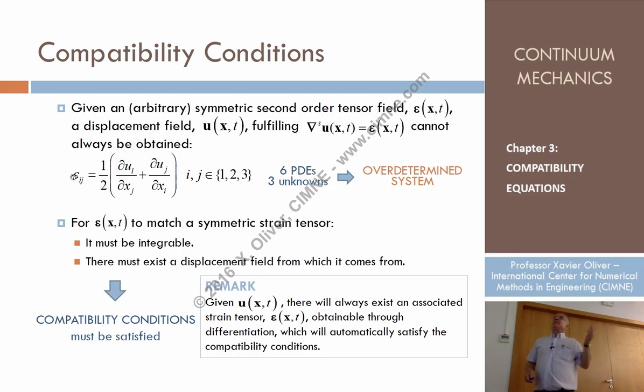So we need that this epsilon not to be any, but fulfill some conditions such that the problem is no longer overdetermined, and that system of six PDEs